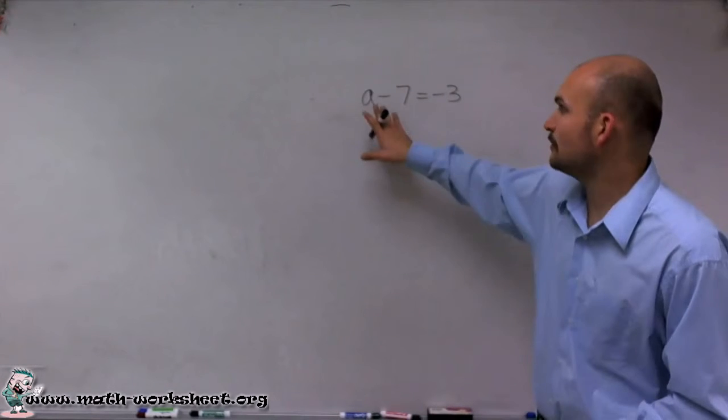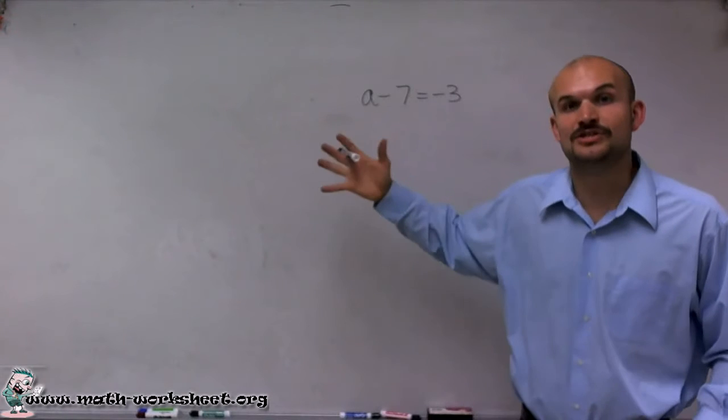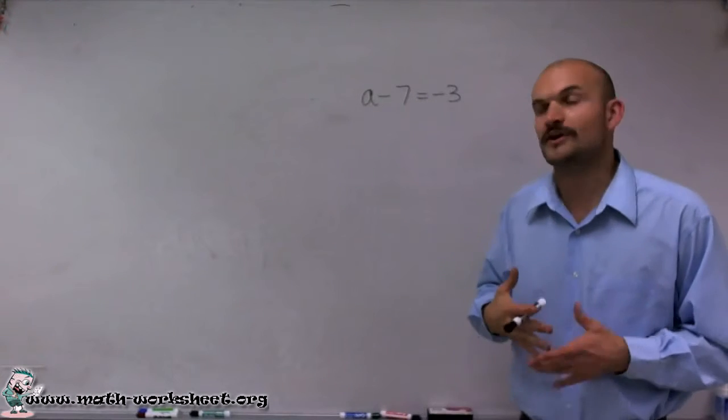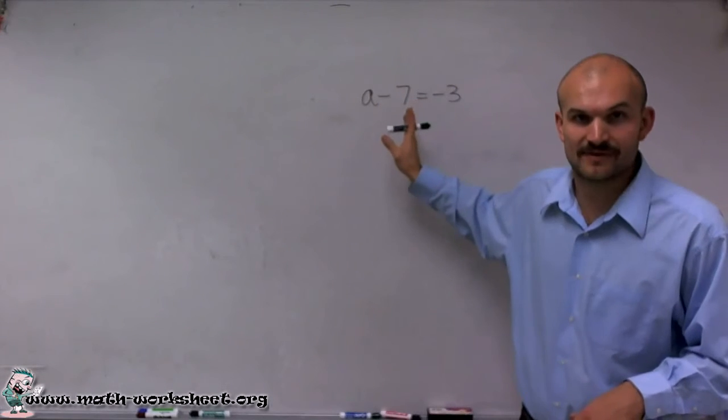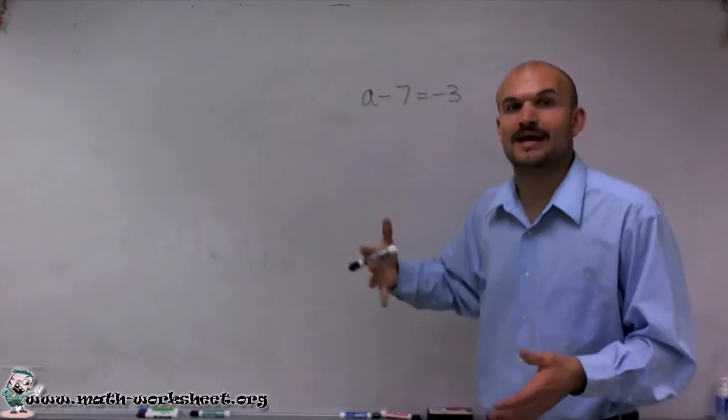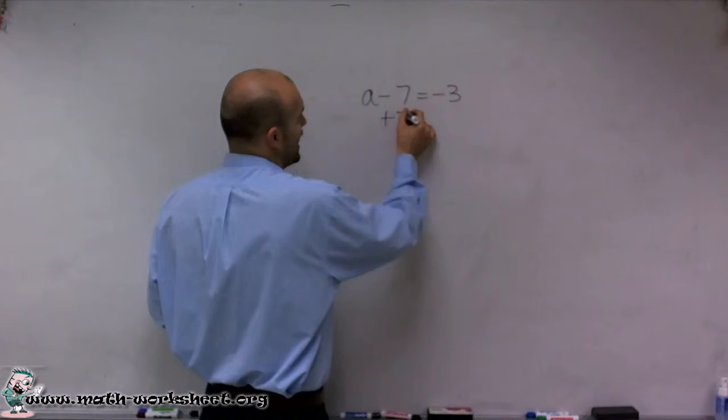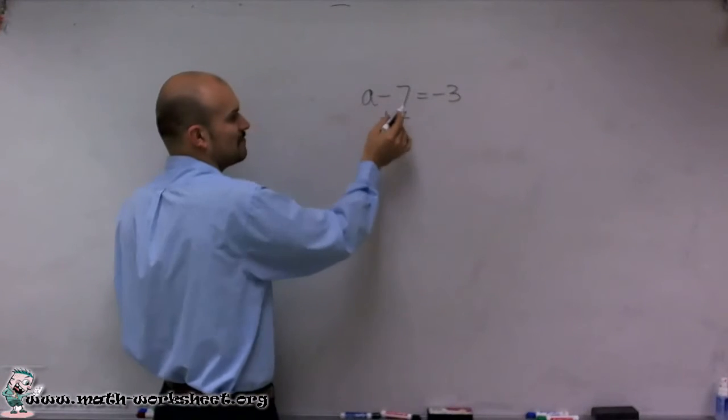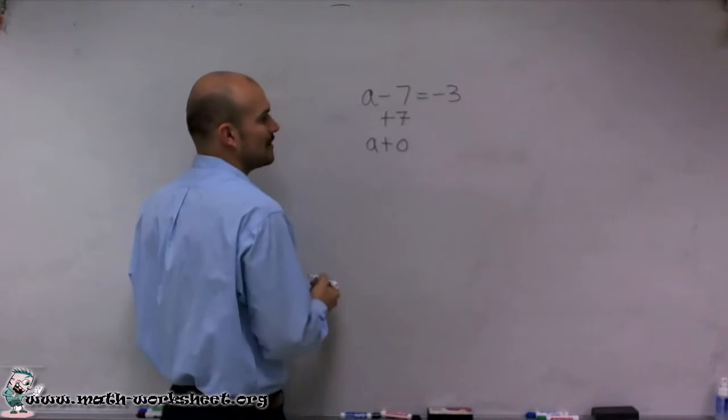So what we want to do is isolate that variable a. To do that, we want to undo everything that's happening to the variable. I look at the variable and notice that my variable is being subtracted by 7, so to undo that, I'm going to have to add 7. By adding 7, you'll notice that negative 7 plus 7 is going to give you 0, so now I'm going to have a plus 0 on my left side.